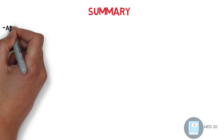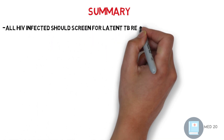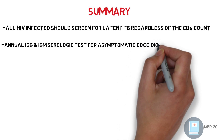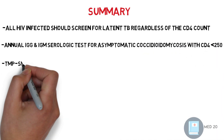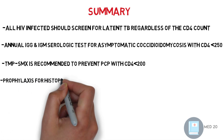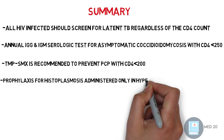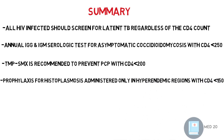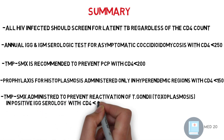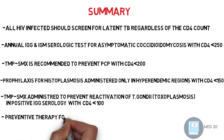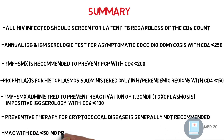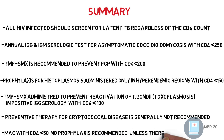In conclusion: All HIV-infected individuals should be screened for latent TB regardless of CD4 count. Annual IgG and IgM serological testing for asymptomatic coccidioidomycosis with CD4 less than 250. Bactrim is recommended to prevent PCP with CD4 less than 200. Prophylaxis for histoplasmosis is administered only in hyperendemic regions with CD4 less than 150. Bactrim is administered to prevent reactivation of T. gondii toxoplasmosis in positive IgG serology with CD4 less than 100. Preventive therapy for cryptococcal disease is generally not recommended. For MAC with CD4 less than 50, no prophylaxis is recommended unless there is a delay in ART.